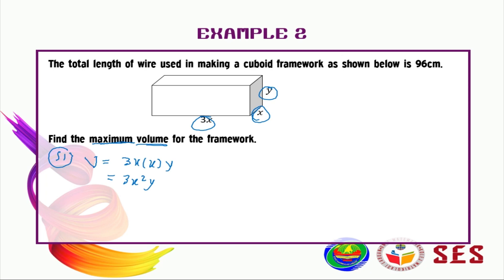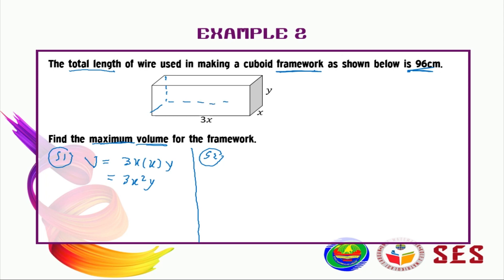So V is equal to 3x squared y. For the second step, you need to express your volume V in terms of only a single variable. Right now we have x and y, so we need to use the remaining information from the question — the 96 centimeters, which refers to the total length of wire used in making the keyboard framework.